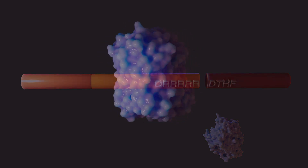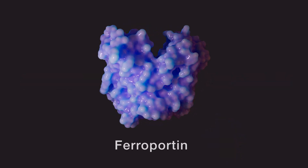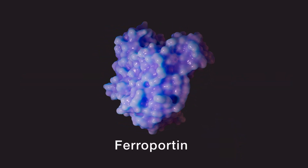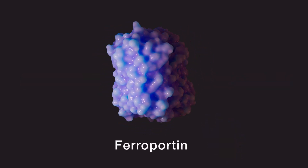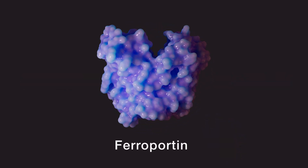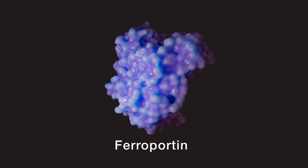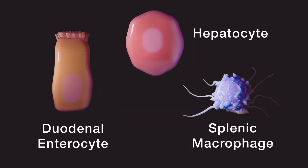The plasma membrane receptor for hepcidin is ferroportin, the iron transporter that transports ferrous iron out of macrophages, hepatocytes, and at the basolateral membrane of enterocytes.